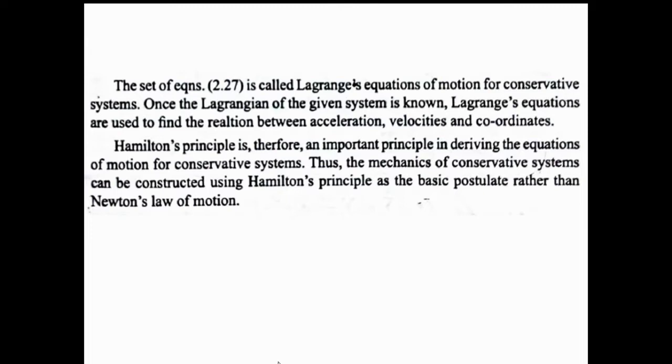This is a set of equations — it is called a set because it holds for the k-th generalized coordinate, and k takes values from 1 to F, giving F number of equations. Here F equals 3N minus P, where N is the number of particles. This set of equations is called the Lagrange equation of motion for a conservative system. If the system is non-conservative in nature, we cannot use the Lagrange equation of motion to find information such as acceleration, velocity, and position.